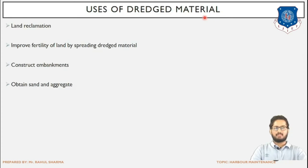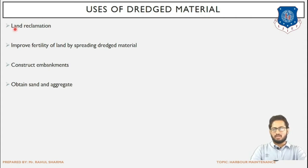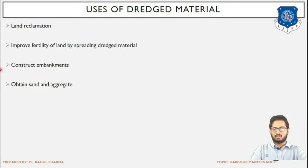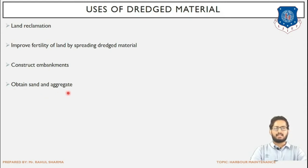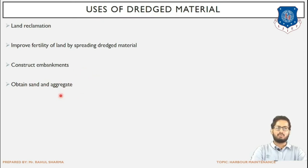The dredged material obtained after the dredging operation can be used in several ways: land reclamation, improving fertility of land by spreading the dredged material, constructing embankments such as dikes, and obtaining sand and aggregates. By carrying out the dredging operation we can make use of the sand or natural aggregates obtained.